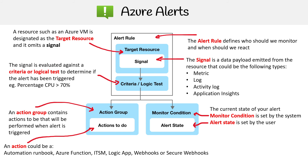On the other side, we have monitor condition and alert state. Monitor condition is set by the system, and alert state is set by the user. The idea is that you can define where it is, because you might want to have a history — for example, saying 'I've resolved this issue, so I'm marking this as closed.' That would be the alert state.